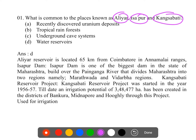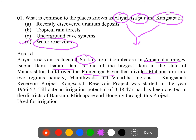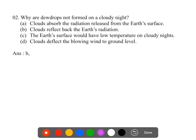These are different irrigation projects in different parts of the country. The answer is option D - water reservoir. It is not an underground cave system, tropical rainforest, or recently discovered rain deposit. Aliyar is situated near Coimbatore, 65 kilometers away in the Annamalai ranges on the Aliyar river. Asiapur dam is located in Maharashtra on the Panganga river, and Kangsavati dam is located in West Bengal. All these dams are used to irrigate surrounding areas and serve drinking purposes. The answer is water reservoir.